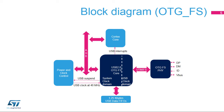The AHB peripheral bus enables read and write access of the controller registers and the power and clock control block. Depending on the use case, whether device-only or OTG device, a low- or high-speed crystal oscillator is necessary to provide an accurate timing reference for the USB block.